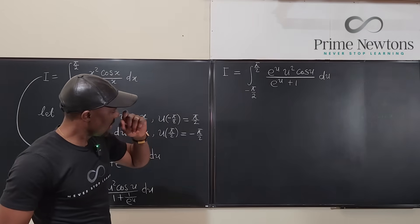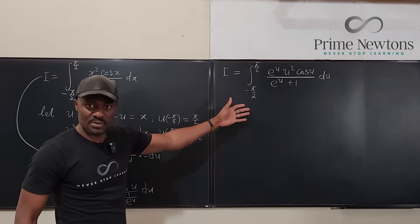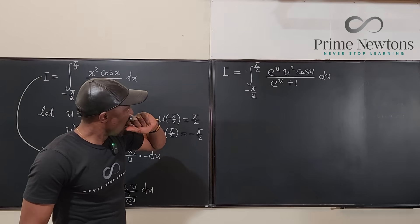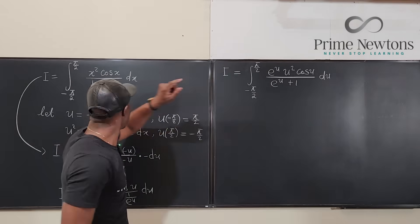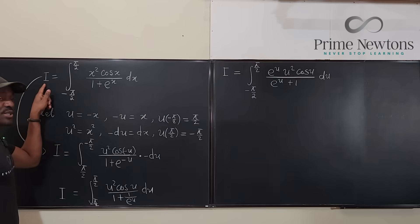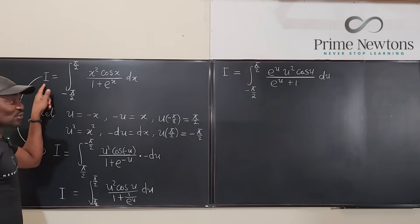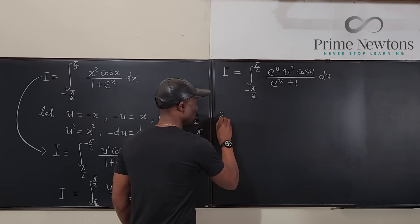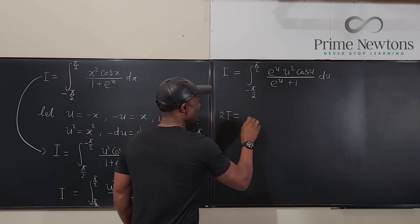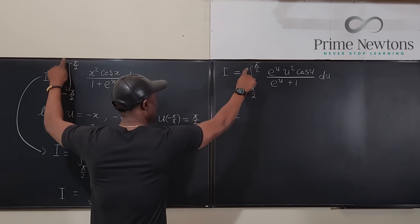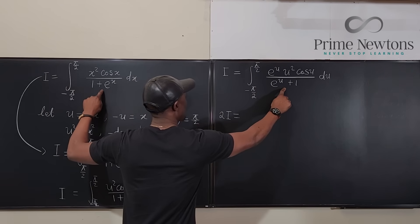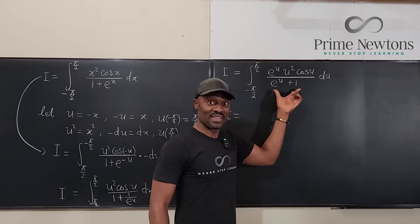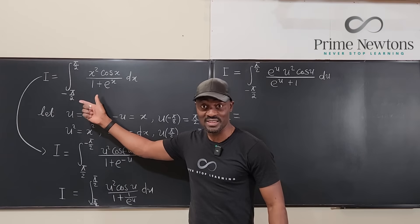So the question is what does this do for me? Well what it does for me is that this is I and the original equation is also I. So I can add these two I's together and then I'm going to get 2I and it's going to be the sum. Look that the limits are the same, it's just the arguments that are slightly, they look different but I promise you if you integrate this you're going to get the same answer as if you integrate this.